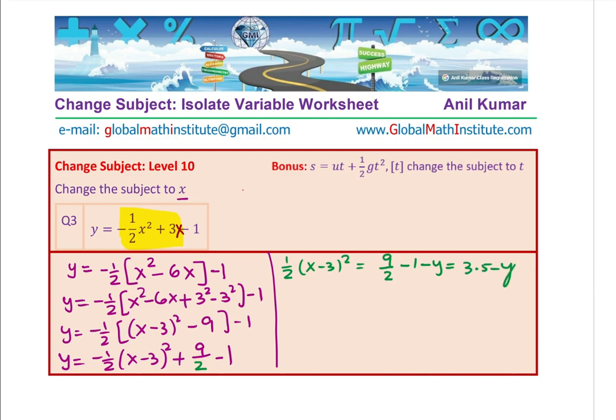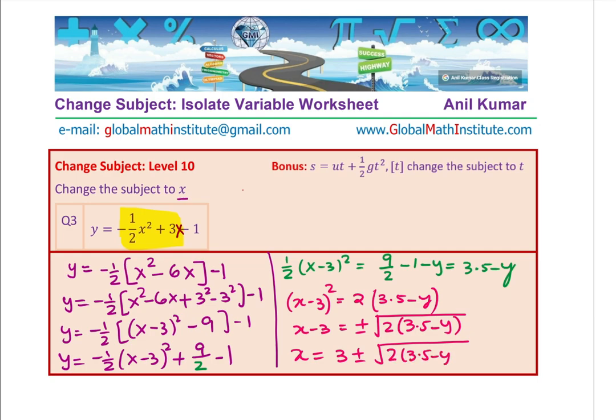So now, x - 3 is equal to what? (x - 3) whole squared will be 2 times all this, which is 3.5 - y. Let's square root it. So we get x - 3 equals to plus minus. So whenever you square root, you have to write plus minus. √(2 times 3.5 - y). And then take 3 on the other side. So we get x = 3 ± √(2(3.5 - y)). Make sense?